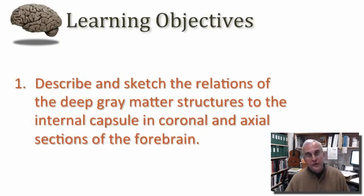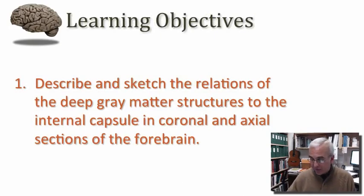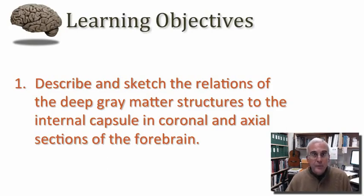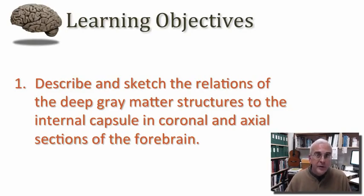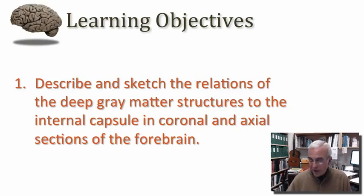My learning objective for you today is that I want you to be able to describe and even to sketch the relations of the deep gray matter structures that we find within the core of the forebrain with respect to the internal capsule. This is an important white matter structure that runs right through the middle of each hemisphere, and I want you to appreciate the relationship of the deep gray matter to the internal capsule as viewed in both the coronal and the axial planes of section through the forebrain.